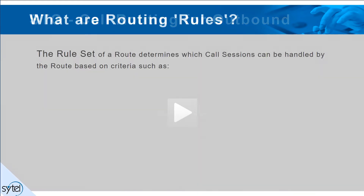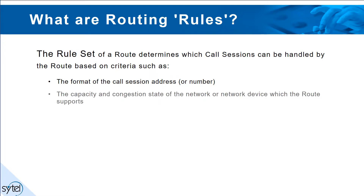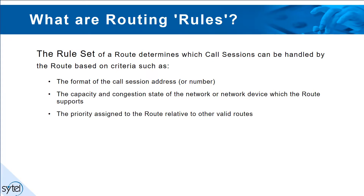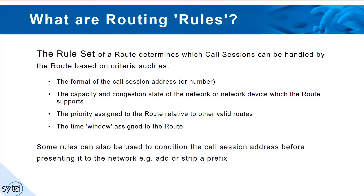The rules set of a route determines which call sessions can be handled by the route based on criteria such as the format of the call session address or number, the capacity and congestion state of the network or network device which the route supports, the priority assigned to the route relative to other valid routes, and the time window assigned to the route. Some rules can also be used to condition the call session address before presenting it to the network — for example, adding or stripping a prefix.